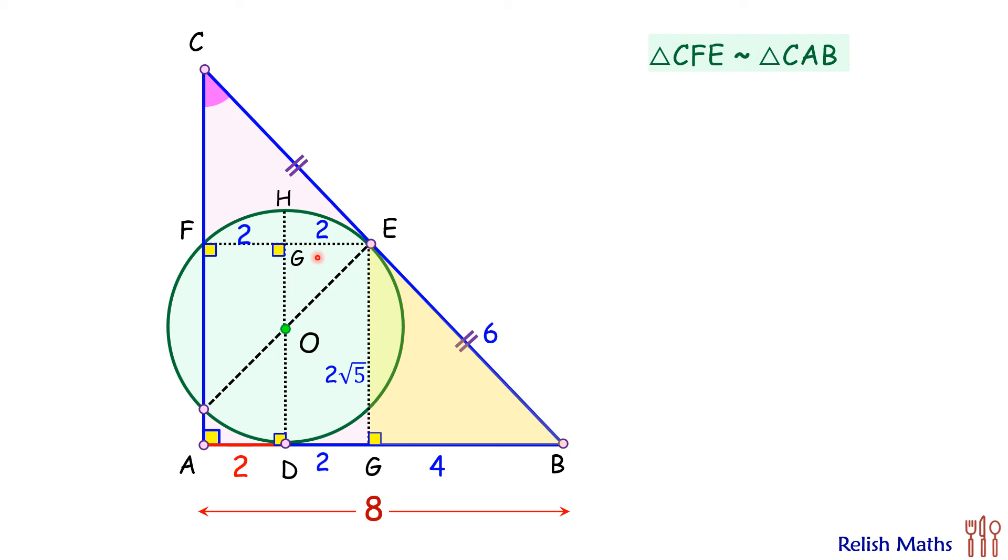If EG is 2√5 then so will be GD, that is 2√5. Now here in this circle if we look, FE is a chord and DH is also a chord. They are intersecting each other at point G.